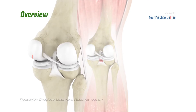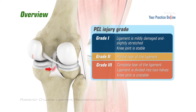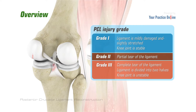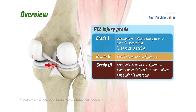Injuries to the PCL are graded based on the severity of the injury. In grade one, the ligament is mildly damaged and slightly stretched, but the knee joint is stable. In grade two, there is a partial tear of the ligament. In grade three, there is a complete tear of the ligament and the ligament is divided into two halves, making the knee joint unstable.